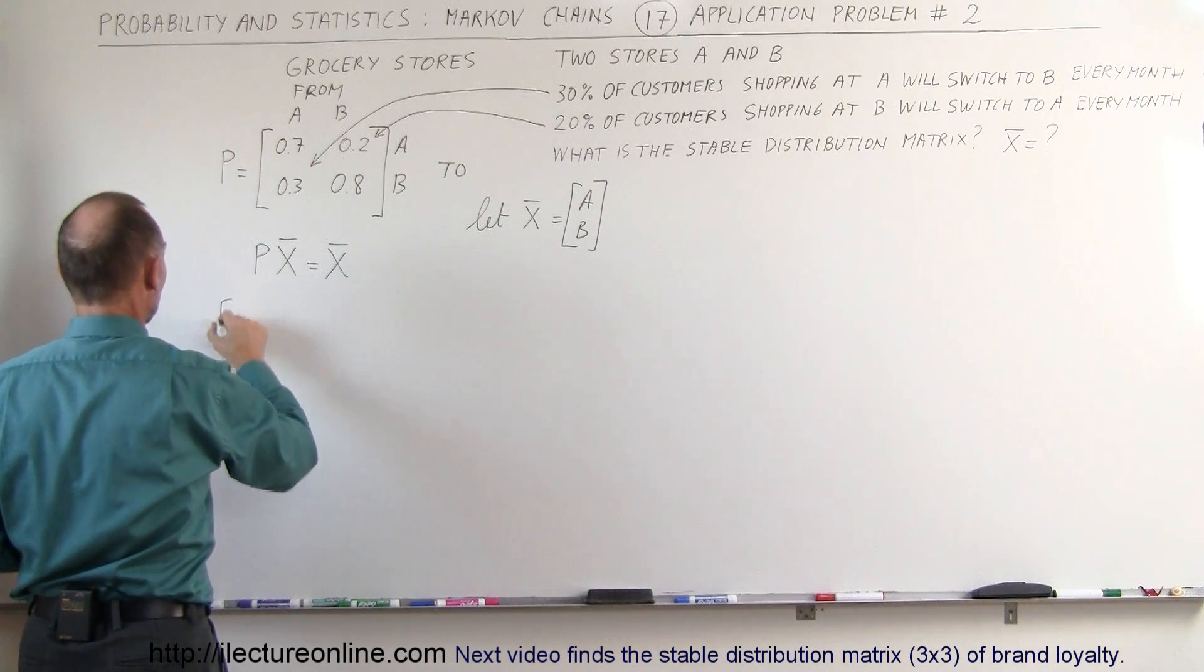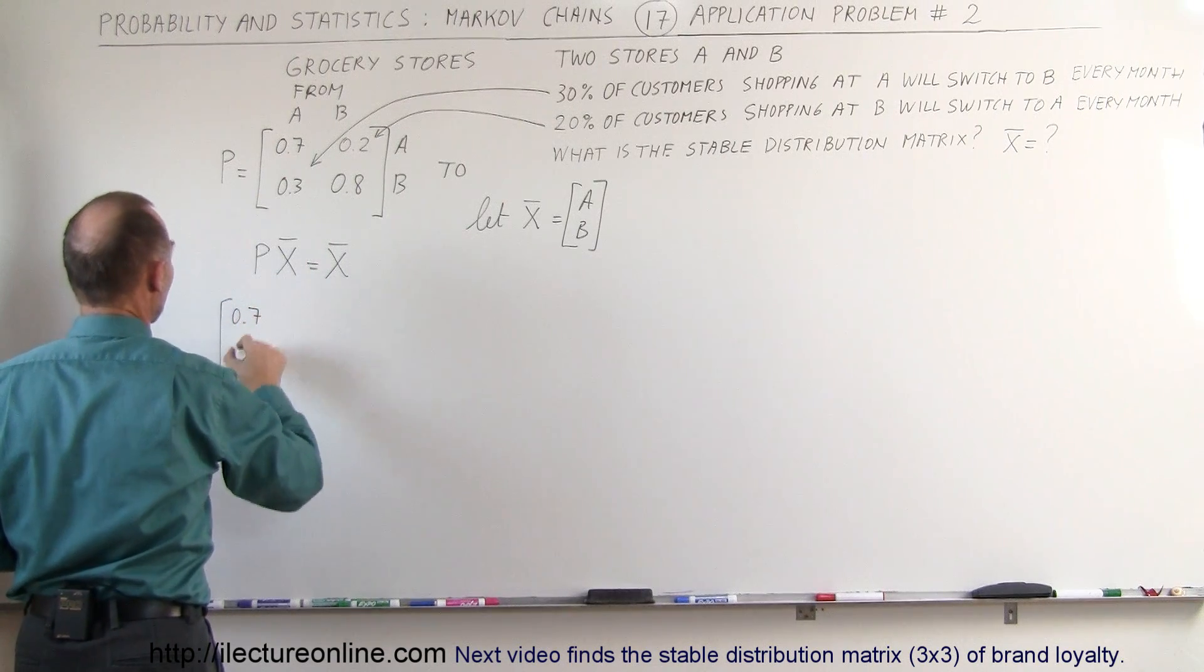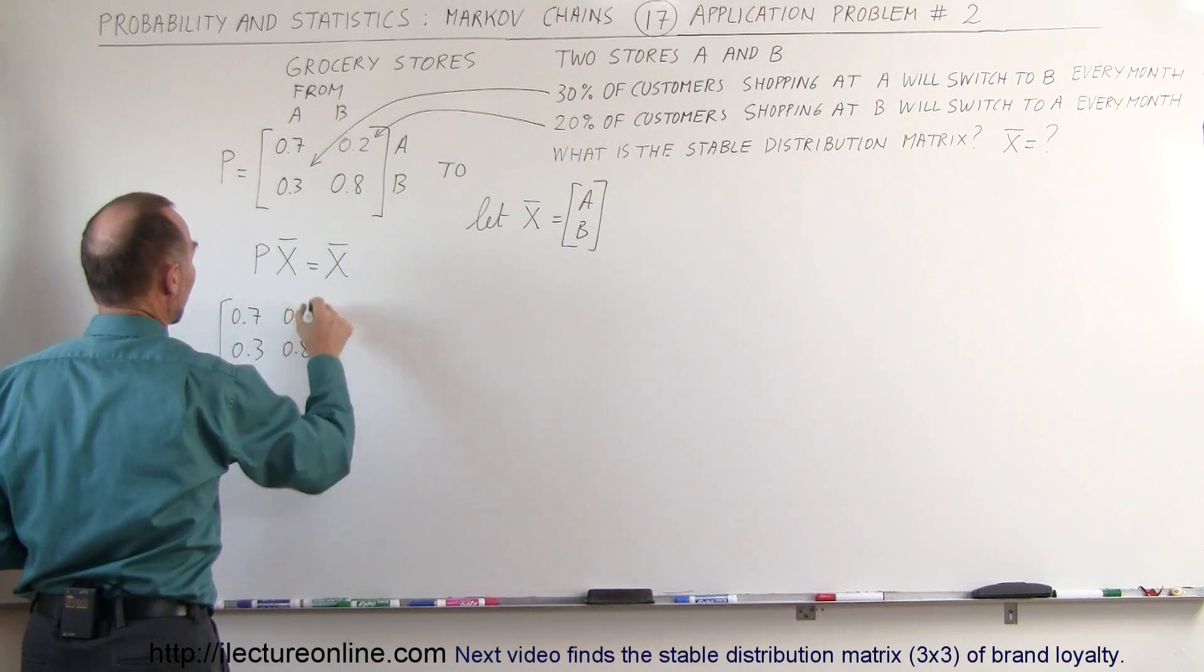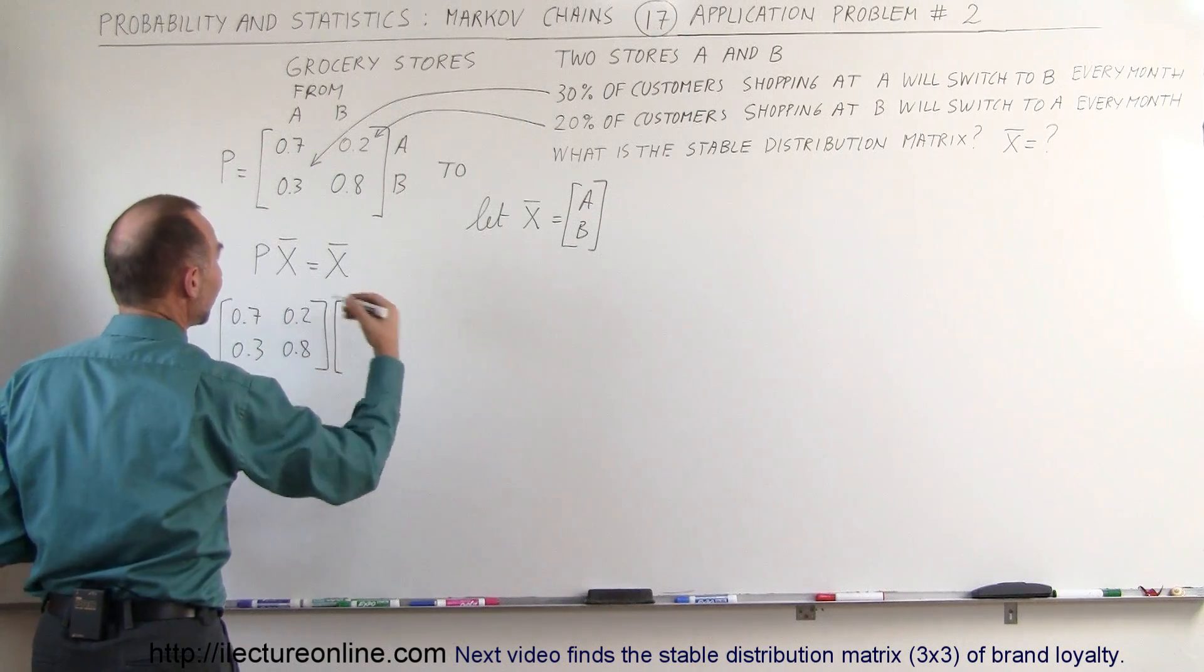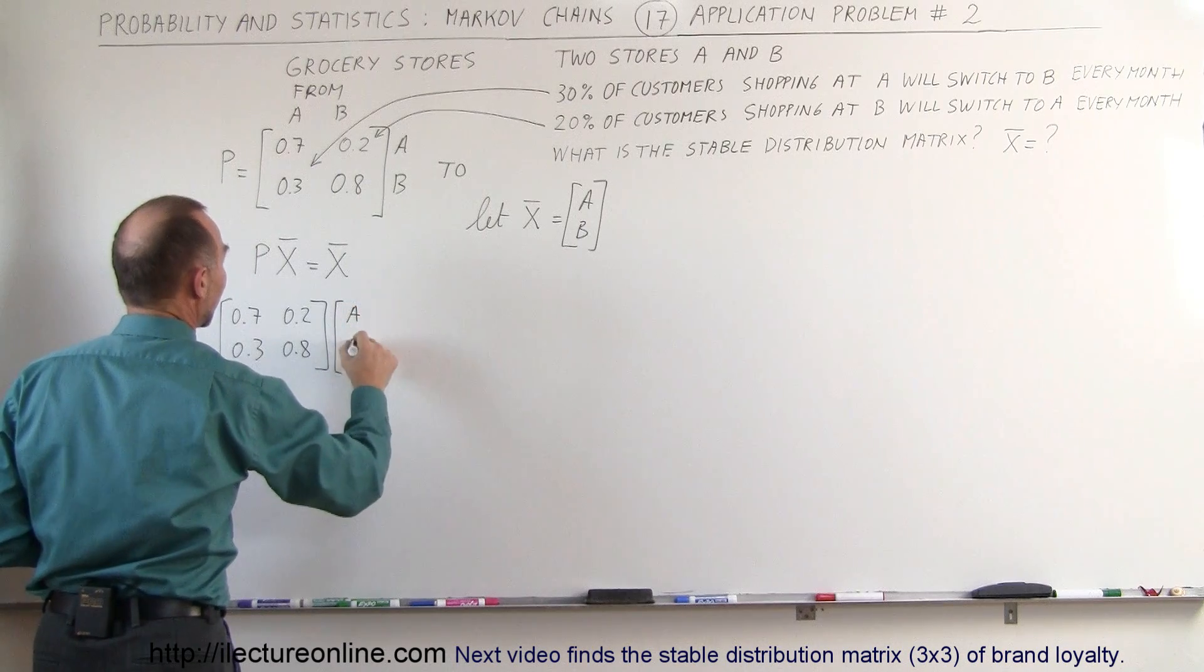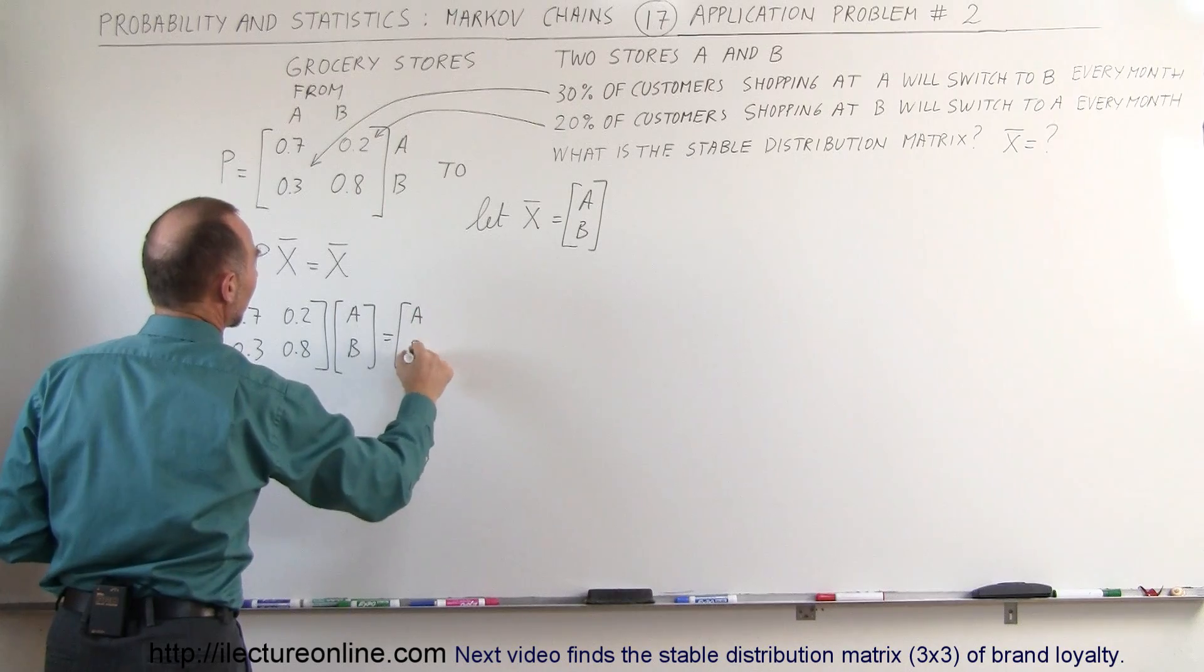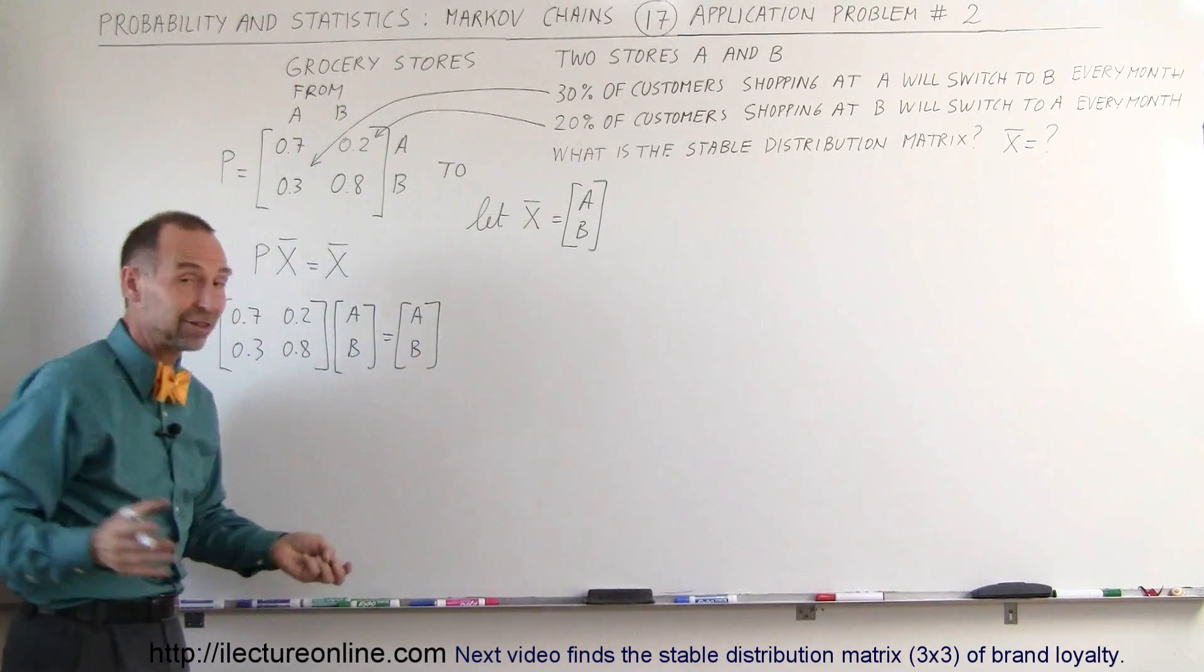So we're going to multiply this matrix, which is 0.7, 0.3, 0.2, and 0.8, and we're going to multiply that times the final states of A and B. When we do that, we should get the final states of A and B, and all we have to do now is find out what those final states are.